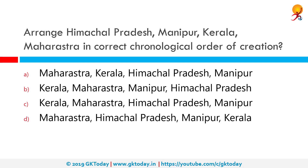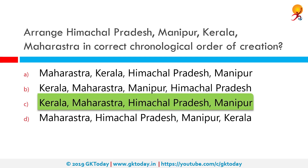Arrange Himachal Pradesh, Manipur, Kerala and Maharashtra in correct chronological order of creation. The correct answer is Kerala, which was created in 1956, followed by Maharashtra created in 1960, Himachal Pradesh created in 1970, and finally Manipur in 1971.